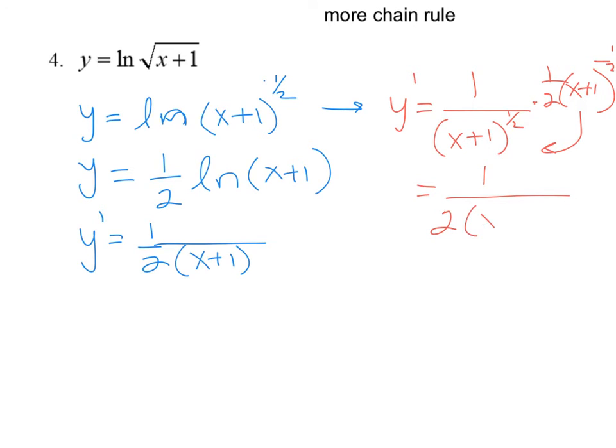1 over 2 x plus 1 to the, 1 half plus 1 half is just 1. So I get the same thing. But this is far superior using the properties of logs, which we talked about in class and reviewed. If you'll rewrite it with the power rule, it makes the derivative much easier.